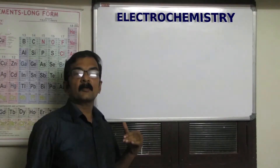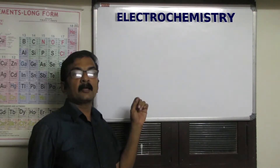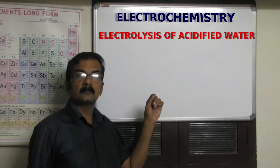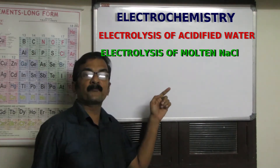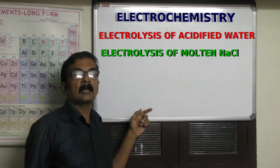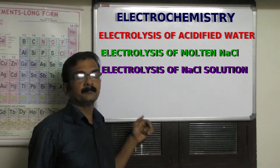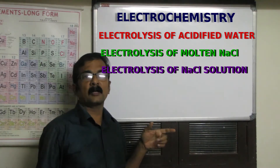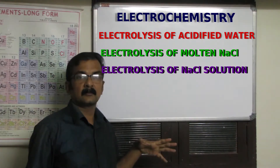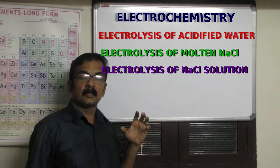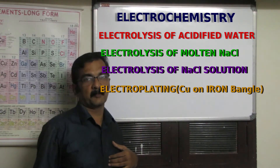Here we demonstrate four experiments. The first one is electrolysis of acidified water. The second one is electrolysis of fused sodium chloride. The third one is electrolysis of sodium chloride solution. The fourth one is an application of electrochemistry — electroplating — where we plate an iron ring with copper metal.